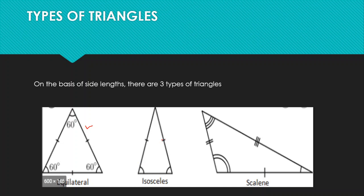An isosceles triangle has two equal sides — this side and this side are equal in length, while the third side is different. A scalene triangle has three different side lengths — all three sides are of different lengths.